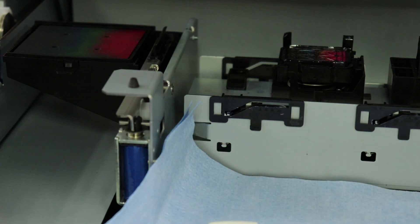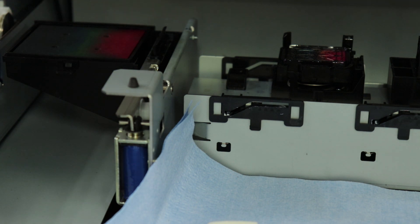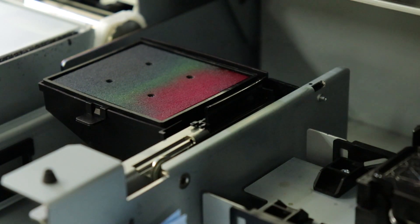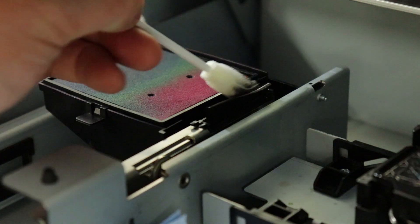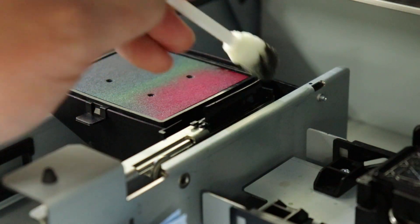The next thing we're going to clean is the wiper, which is located just to the left of the capping station. Take your swab and make sure to clean both sides and the top of the wiper, also removing any ink buildup or dust.